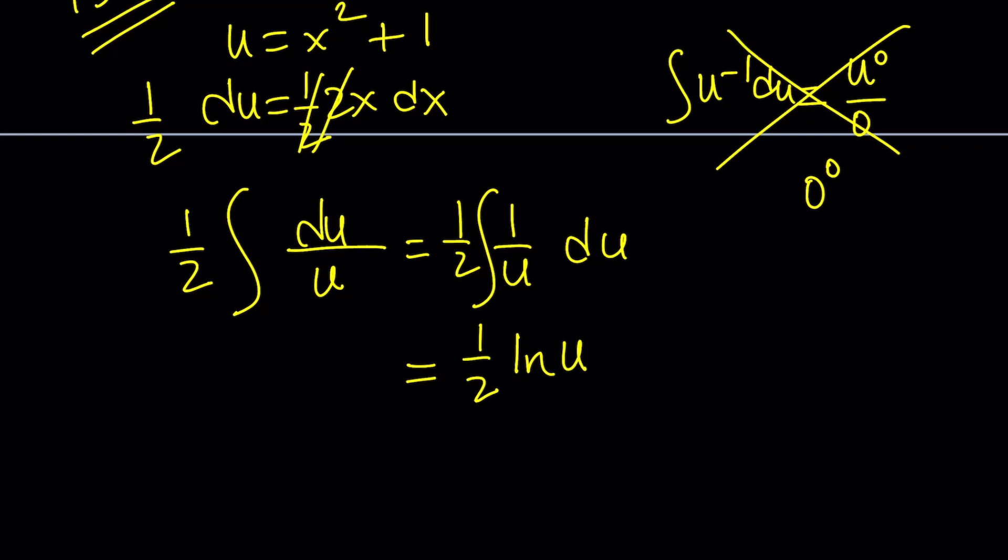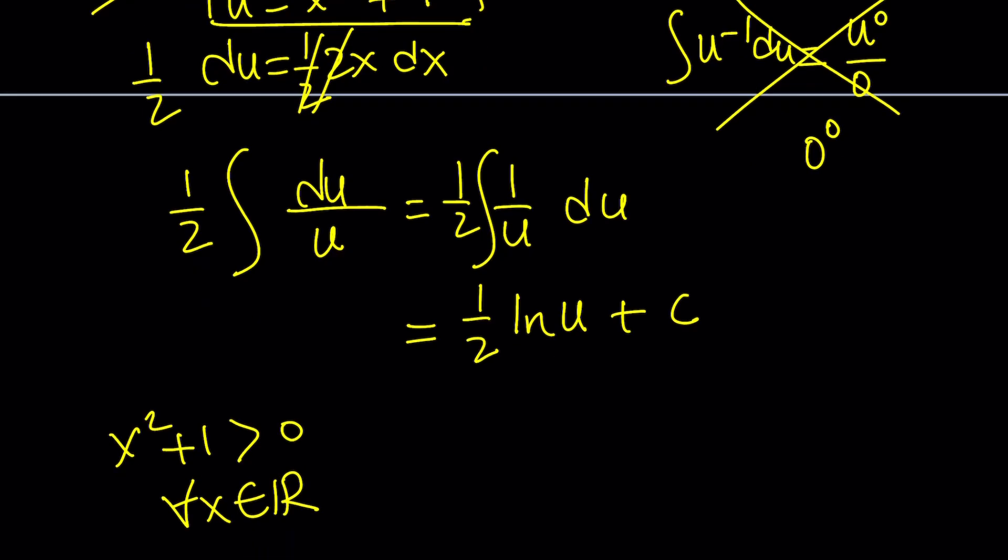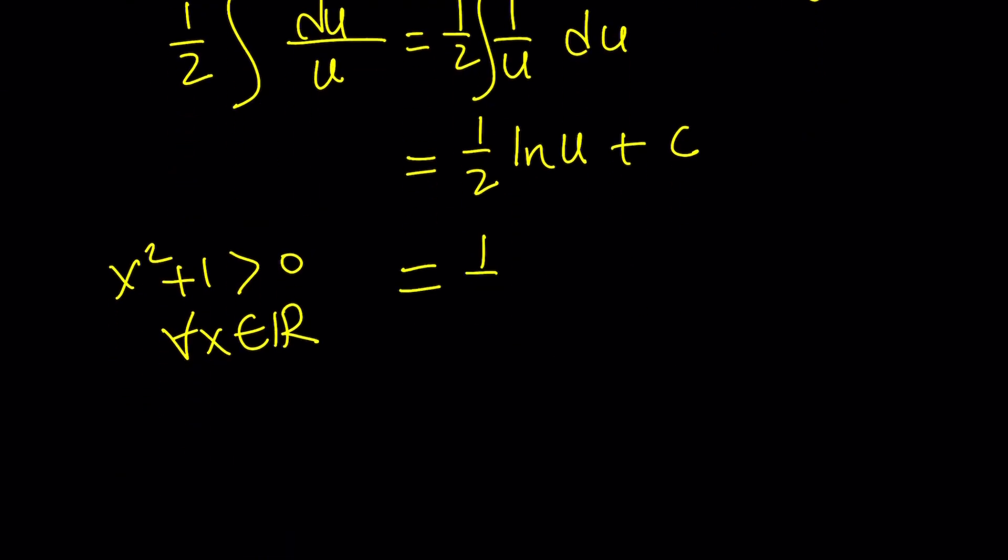Normally, we would use absolute value, but in this case, you don't need to because u cannot be negative. Can't even be 0 in the real world. So in other words, x squared plus 1 is greater than 0 for all x values that are in the set of real numbers. So our result becomes then 1 half ln x squared plus 1 plus c. Don't forget the constant. It's a big deal. That's the first method.